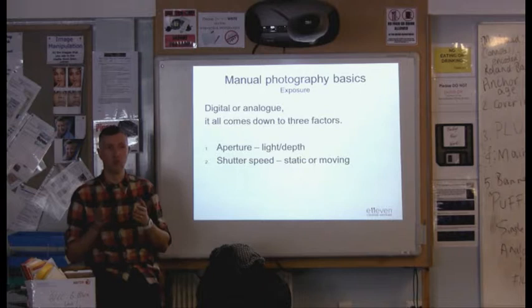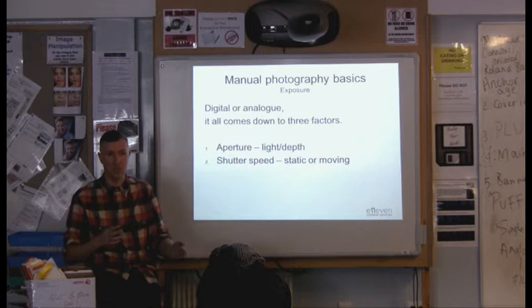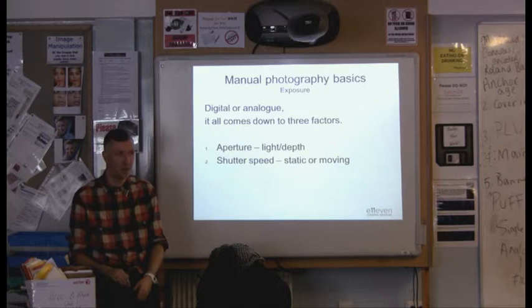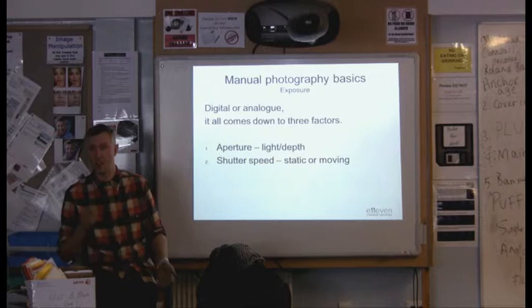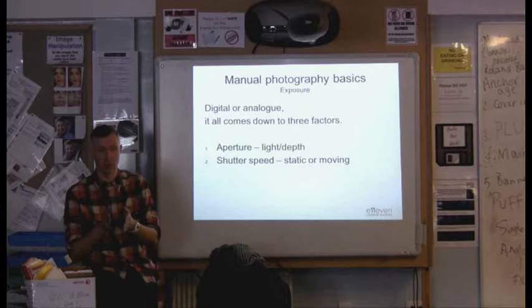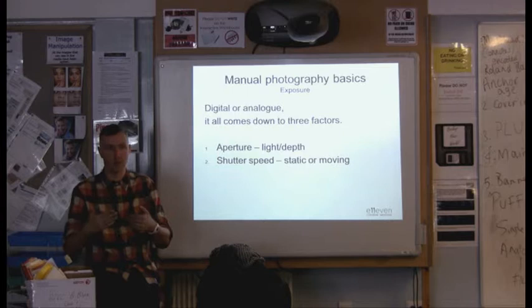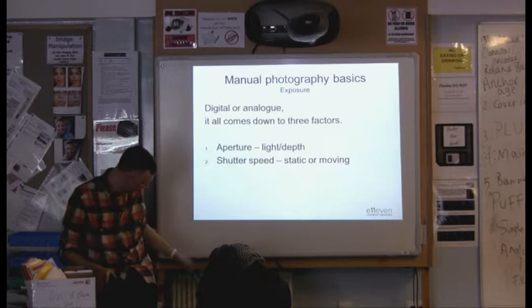Shutter speed is primarily used to control movement, or lack of it. If you want to convey movement in an image, use a slow shutter speed. But if you want to catch someone in perfect detail without any blur, use a fast shutter speed. You'll notice on a phone at night, even when your flash fires, if people are moving they'll be a bit blurry - because the camera has to keep the shutter open longer to make sure the picture is fully exposed and enough light gets onto the sensor.